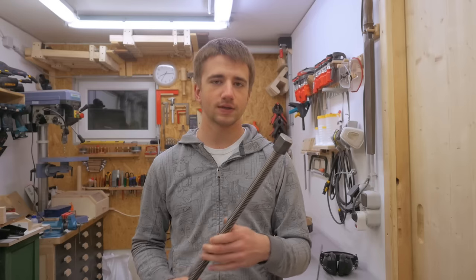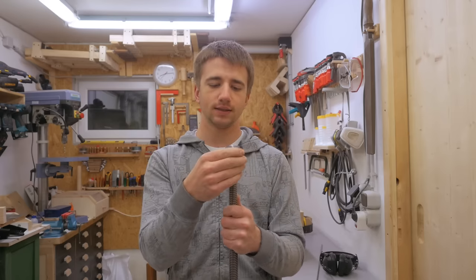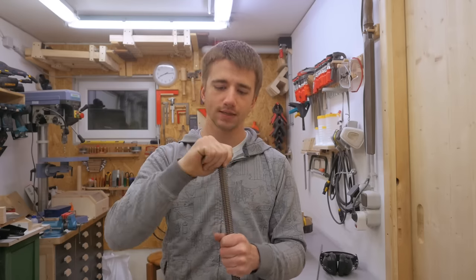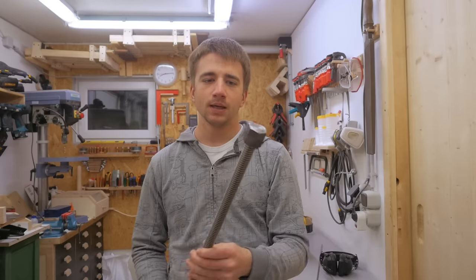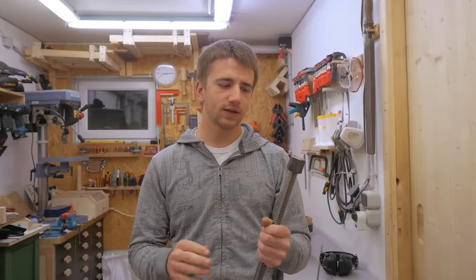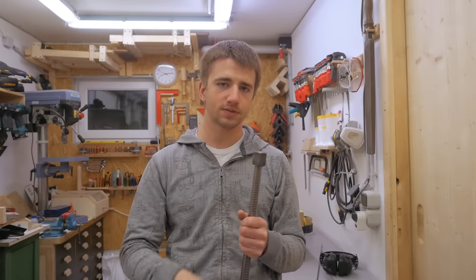Then I cut the threaded rod to size and I front welded the nut at the end so that I can turn the threaded rod with the nut. And I then turned the weld flat again. But now just to be on the really safe side I'm also going to drill a hole all the way through for a cross pin.